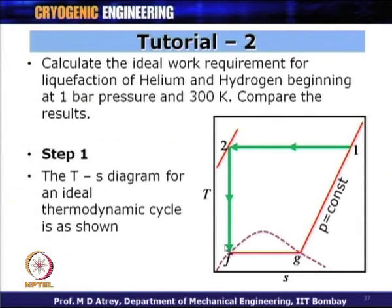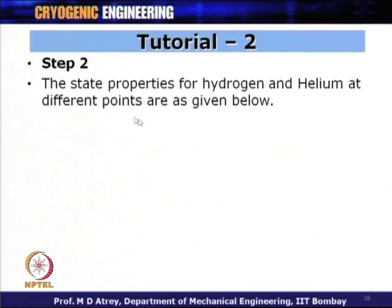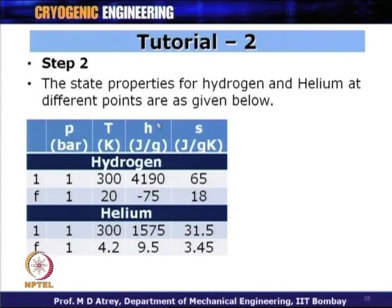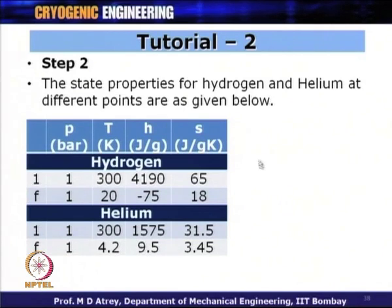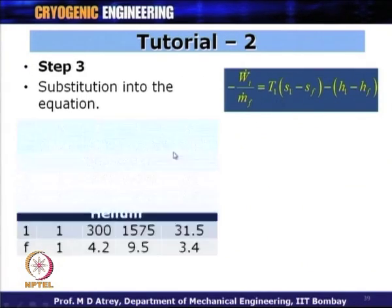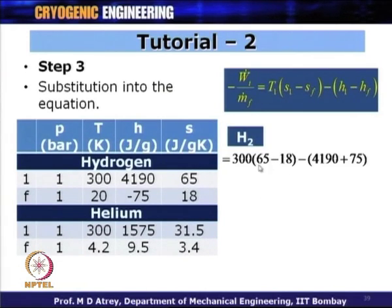One needs to locate only point 1 and point F — point 2 is at very high pressure. The state properties of hydrogen and helium at 1 bar: at point 1 the temperature is 300 Kelvin for both; at point F, hydrogen is at 20 Kelvin and helium is at 4.2 Kelvin. Reading enthalpy and entropy values from the respective charts and substituting into the equation.